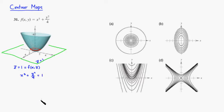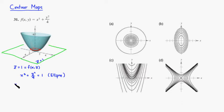Notice that this is just an equation of an ellipse. If you try another curve, for example z equals 4, so z equals 4.